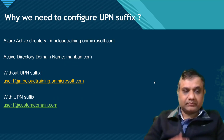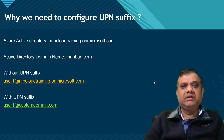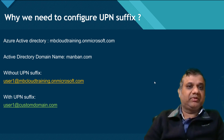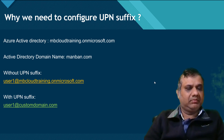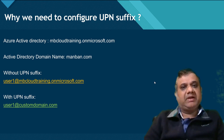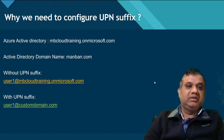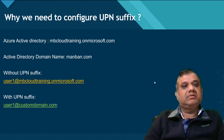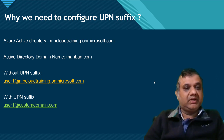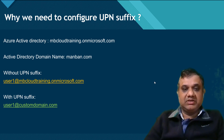Why do we need to configure the UPN suffix? For example, your Azure Active Directory account will have a domain on .onmicrosoft.com — something like mbcloudtraining.onmicrosoft.com — while your on-premises Active Directory domain might be manman.com. If you don't configure the UPN suffix, users synced to the cloud will show as user1@mbcloudtraining.onmicrosoft.com. But if you configure the UPN suffix with your own custom domain, it will show as user1@customdomain.com, which is what we want — using a domain already registered with your DNS registrar.